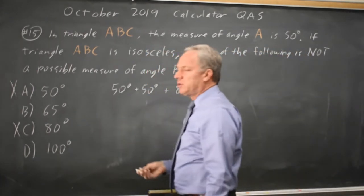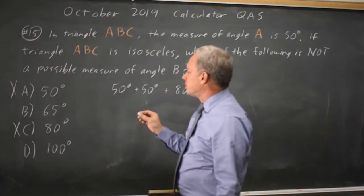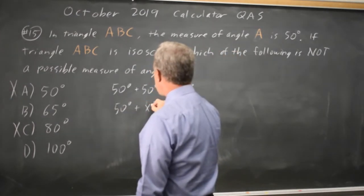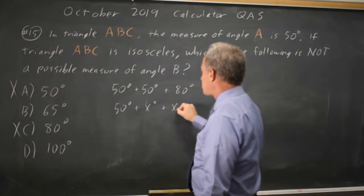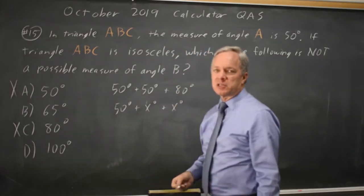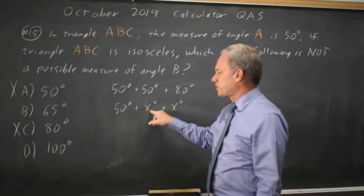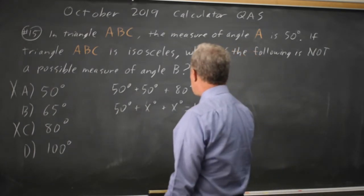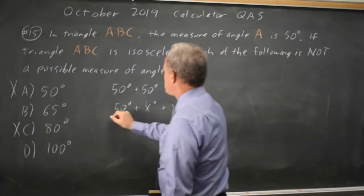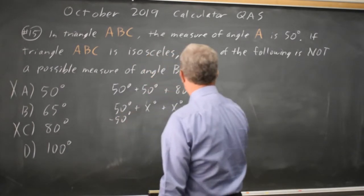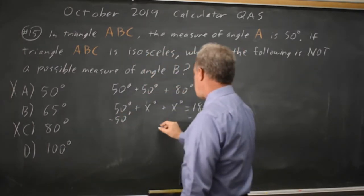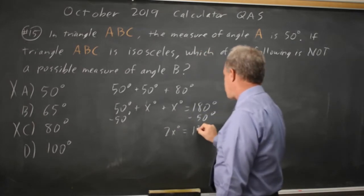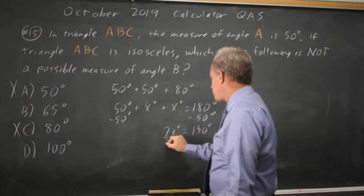if no angle is equal to 50 degrees, then you have 50 degrees plus, let's call it x degrees for the second angle, and the third angle has to be x also because the third angle is not equal to 50, so it must be equal to x. And that equals 180 degrees, subtracting 50 degrees,